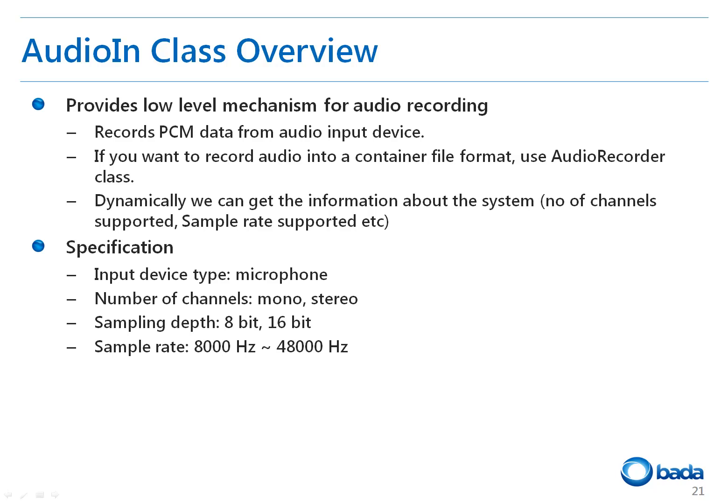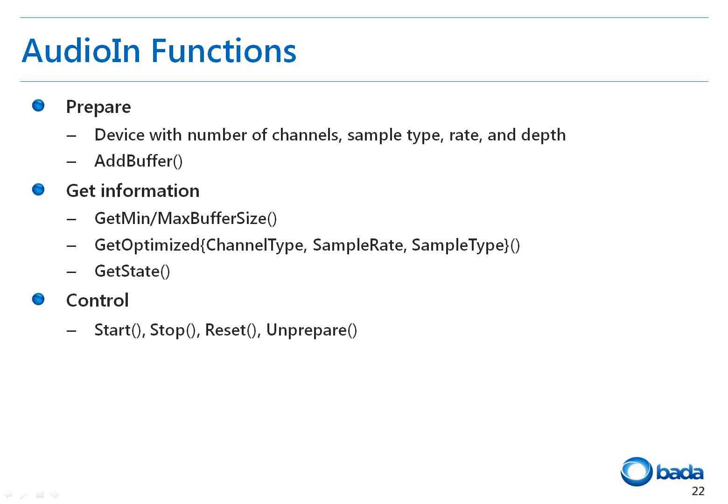The AudioIn class specifications include microphone input device support, mono and stereo channel options, and both 8-bit and 16-bit sampling depths. In the process of preparing AudioIn, you specify the recording source device, whether audio is mono or stereo, the sampling type, sampling rate, and sampling depth. The function to add a buffer for recording is provided. Various get functions retrieve the minimum and maximum buffer size, as well as the type, sample rate, and sample type optimized for the device. The start, stop, and reset functions are also provided.